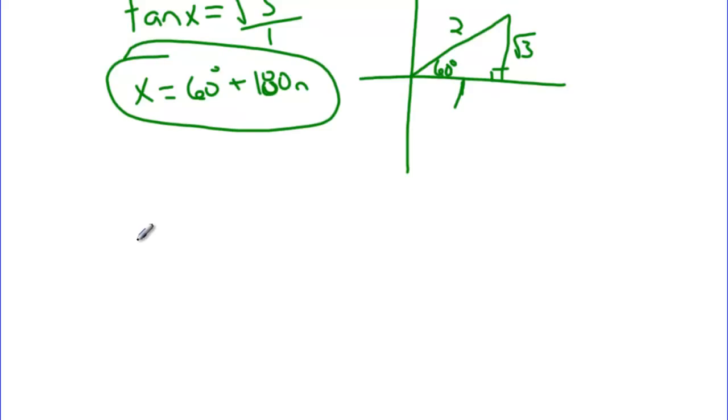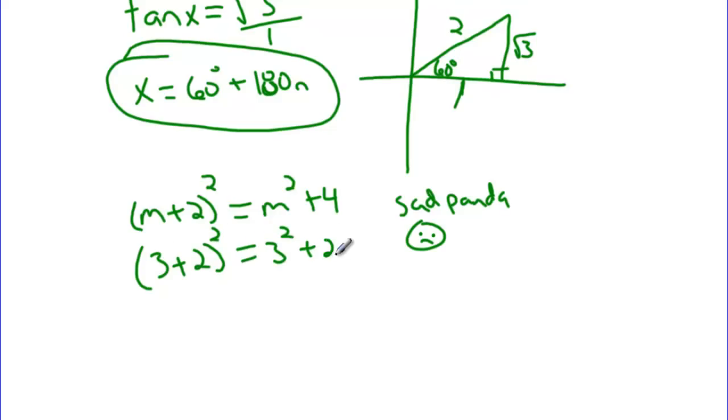I just have one extra thing I want to add, because today in class I saw this a bunch. And this is just an algebraic thing. Some of you think that (m + 2)² is equal to m² + 4. And this makes me sad. This is not true. If you think this, you could plug numbers in to figure out, like 3 + 2 squared. Does this equal 3² plus 2²?